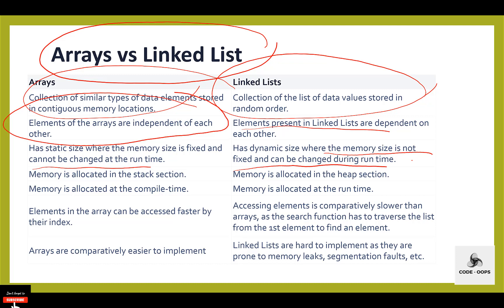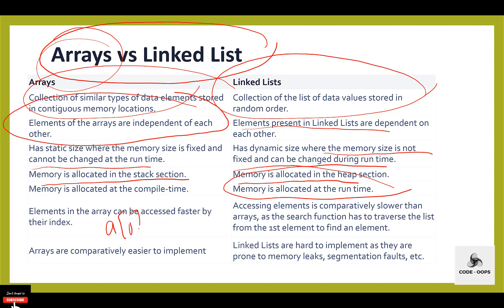In array data structure, memory is allocated in the stack section, but in a linked list, memory is allocated in the heap section. Memory is allocated at compile time in case of array; in case of linked list, memory is allocated at runtime. Elements in an array can be accessed faster by their index, like a[0], a[1], but in a linked list, accessing elements is comparatively slower, as the search function has to traverse the list from the first element to find an element.